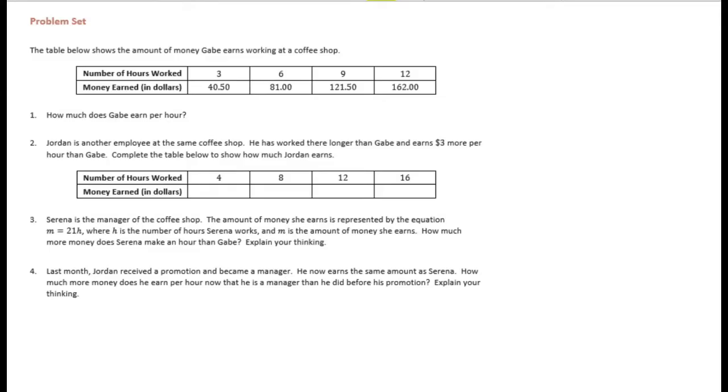The table below shows the amount of money Gabe earns working at a coffee shop. So for 3 hours he earns $40.50, 6 hours $81.00, 9 hours $121.50, 12 hours $162.00.